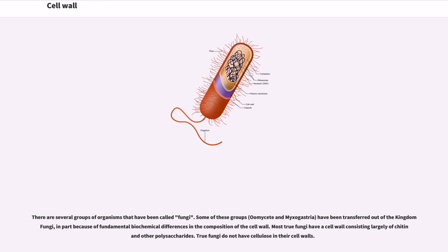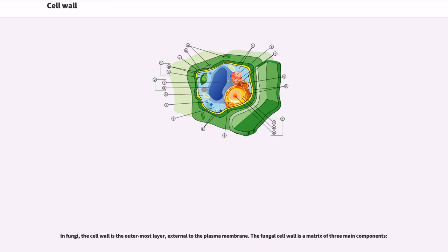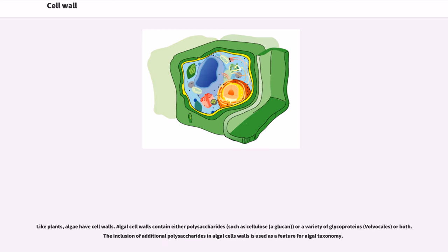There are several groups of organisms that have been called fungi. Some of these groups, oomycetes and myxogastria, have been transferred out of the kingdom fungi, in part because of fundamental biochemical differences in the composition of the cell wall. Most true fungi have a cell wall consisting largely of chitin and other polysaccharides. True fungi do not have cellulose in their cell walls. In fungi, the cell wall is the outermost layer, external to the plasma membrane. The fungal cell wall is a matrix of three main components.